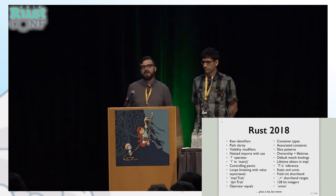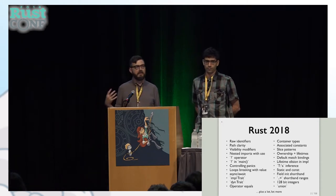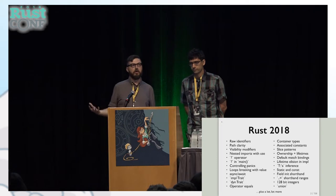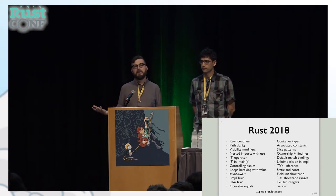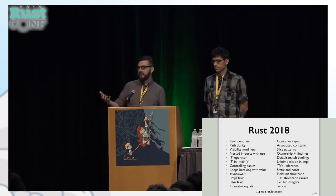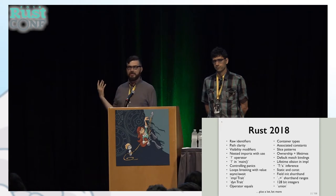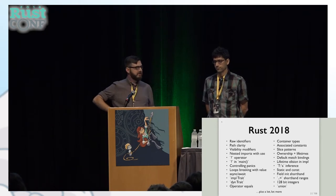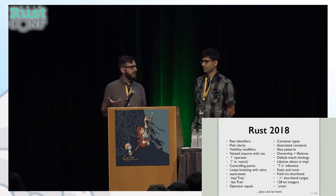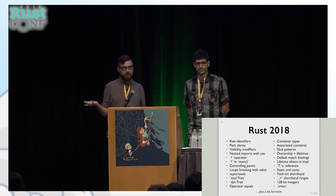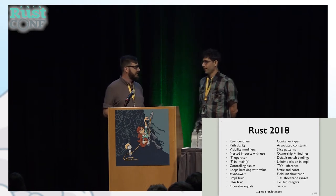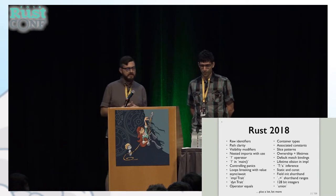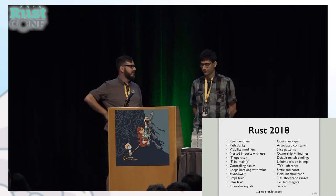I want to talk a little bit about one of the major focuses of this year, which has been Rust 2018, the new edition of Rust. It's basically the culmination of the last four years of work since Rust 1.0 came out. There's a huge list of features: raw identifiers, path clarity, visibility modifiers, nested imports in use statements, the question mark operator in main, panic control, impl trait and dyn trait improvements. We've been working on async/await, but it's not going to ship in Rust 2018, unfortunately.